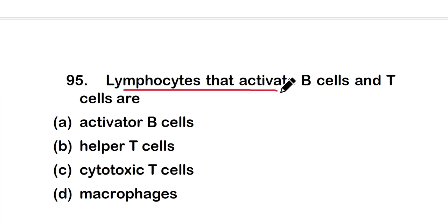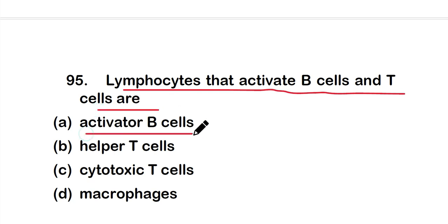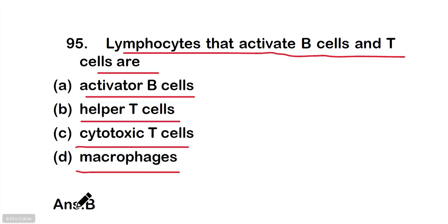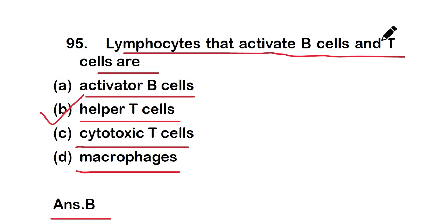Question number 95: Lymphocytes that activate B cells and T cells are — option A: activated B cells, option B: helper T cells, option C: cytotoxic T cells, or option D: macrophages. The right answer is option B — helper T cells activate both B cells and T cells.